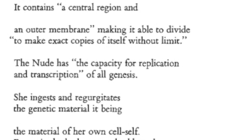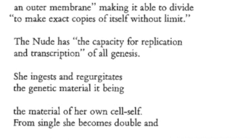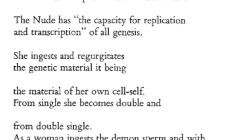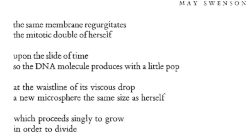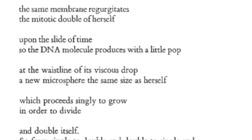The genetic material — it being the material of her own cell self — from single she becomes double, and from double single. As a woman ingests the demon sperm and with the same membrane regurgitates the mitotic double of herself upon the slide of time, so the DNA molecule produces, with a little pop at the waistline of its viscous drop, a new microsphere.